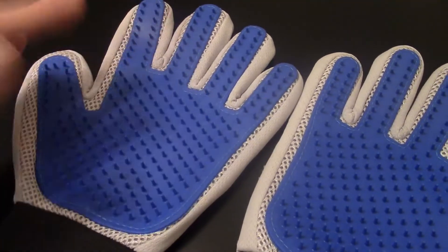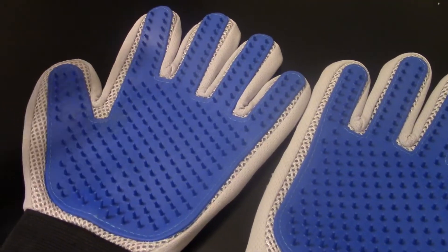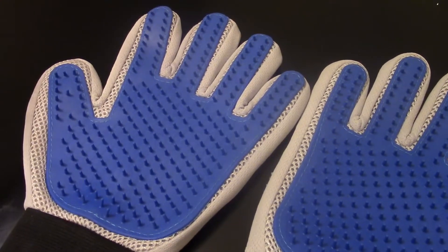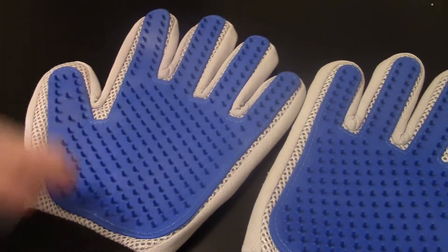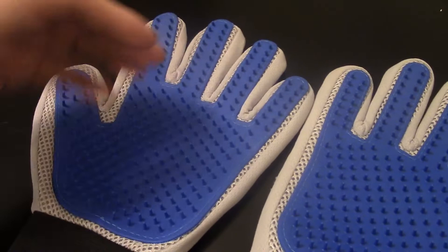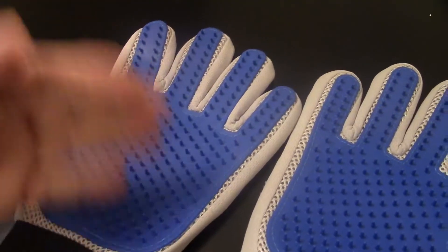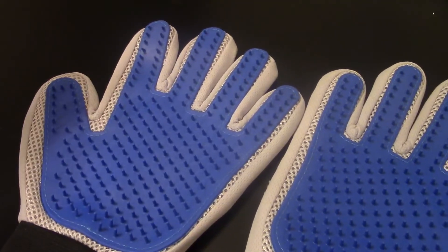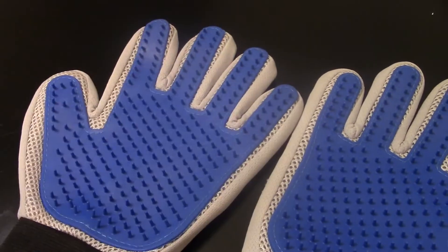But it does help with some shorter hair dogs like a chihuahua or something because they don't have the undercoat. You can just pet your chihuahua or your dachshund, just like you were having a moment with them.